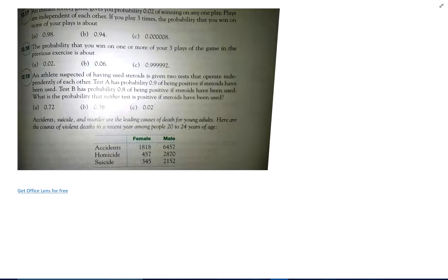17. Instant lottery game gives you the probability of 0.02 or 2% chance of winning on any one play. Plays are independent of each other. If you play three times, the probability you win on none of the plays.